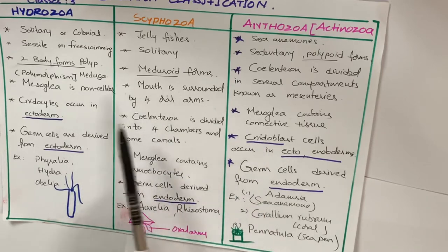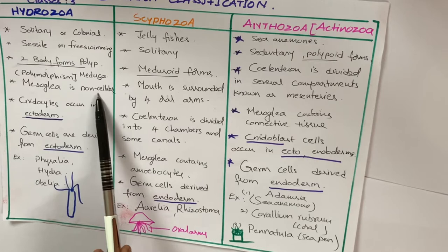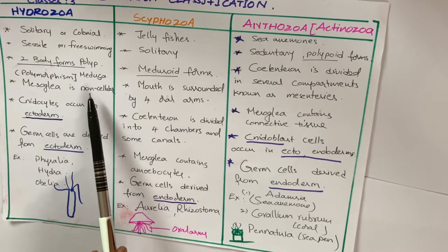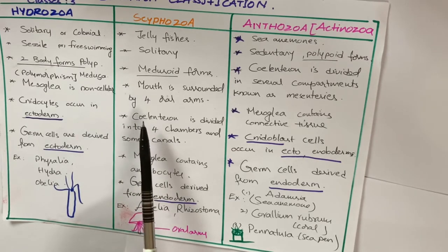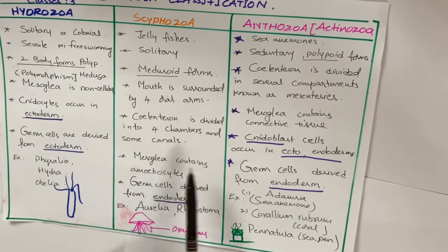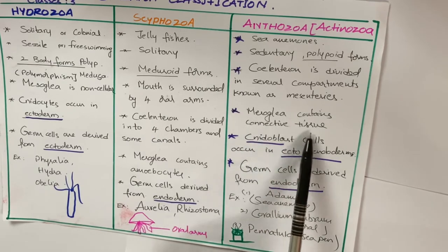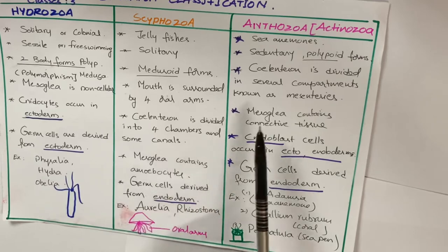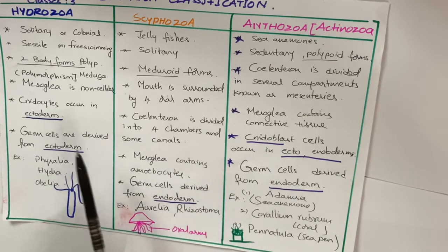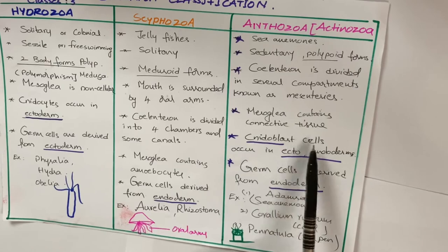The compartments of the coelenteron are known as mesenteries. Mesoglia contains connective tissue. Now, look at the difference between these three classes: in Hydrozoa, mesoglia is non-cellular; in Scyphozoa, mesoglia contains amoebocytes; in Anthozoa, mesoglia contains connective tissue.